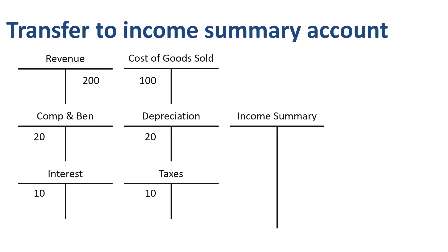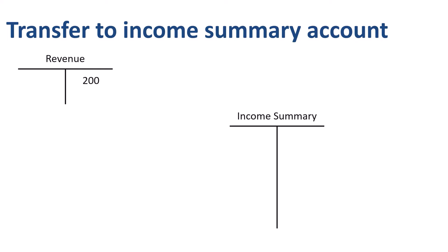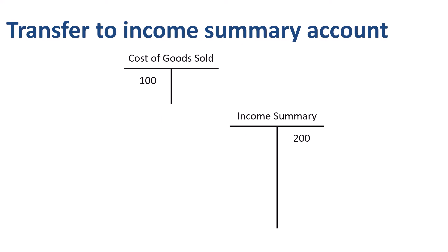Revenue has a credit balance of 200. We need to record a debit of 200 to revenue, and a credit of 200 to the income summary account, in order to make the net account balance in revenue zero. Cost of goods sold has a debit balance of 100. We need to record a credit of 100 to cost of goods sold, and a debit of 100 to the income summary account, in order to make the net account balance in cost of goods sold zero.